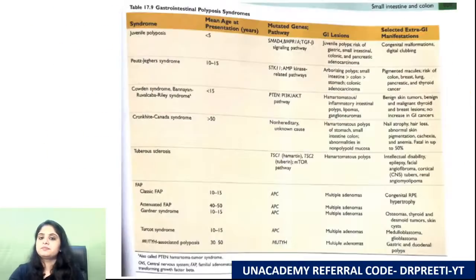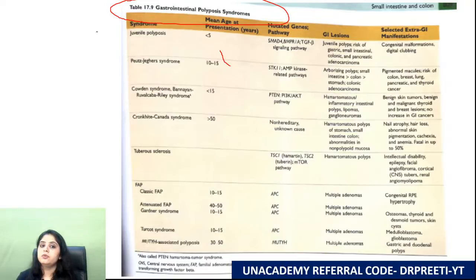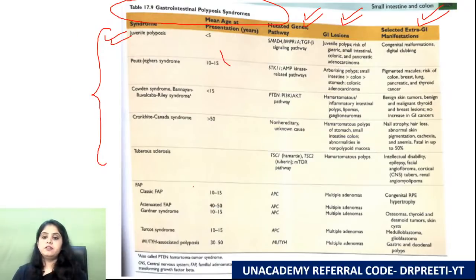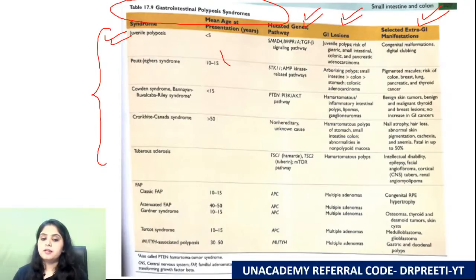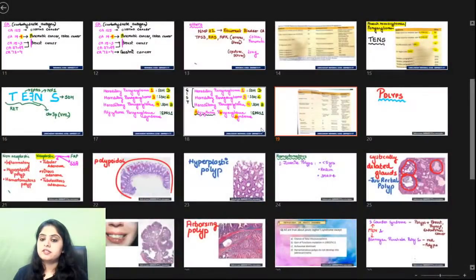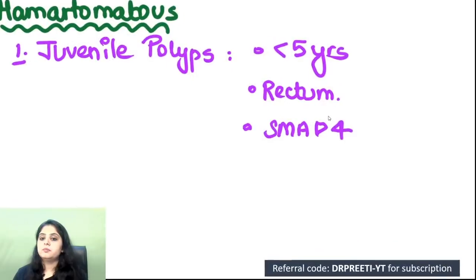Moving to GI polyposis syndromes — a good revision. The syndromes discussed today: juvenile polyposis, Peutz-Jeghers, Cowden, Cronkhite-Canada. The question: which family of polyps? Juvenile polyposis, Peutz-Jeghers, Cowden, and Cronkhite-Canada all belong to hamartomatous polyps.